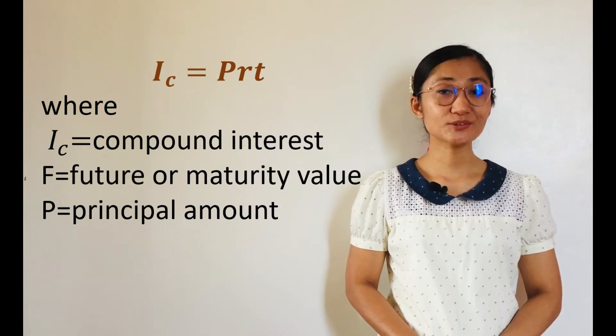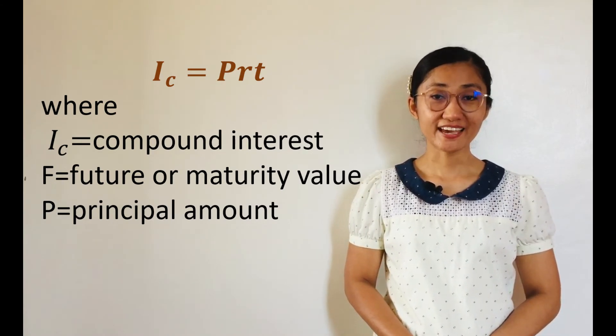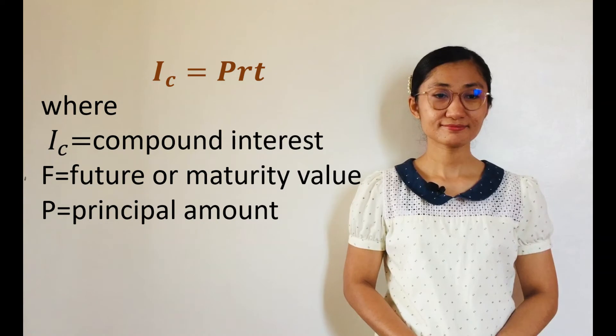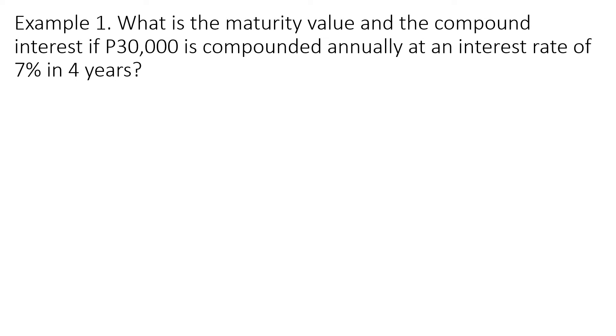Given this, the compound interest denoted by I sub C is defined by I_c equals F minus P. Let us have some applications of compound interest in real-life problems. Example 1: What is the maturity value and the compound interest if P30,000 is compounded annually at an interest rate of 7% in 4 years?